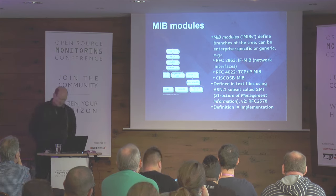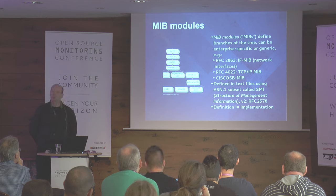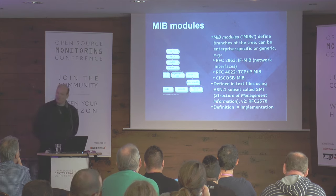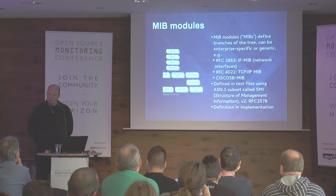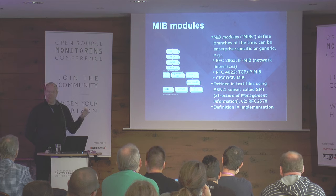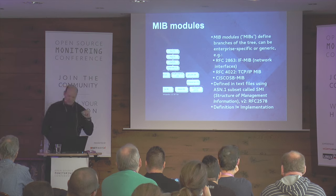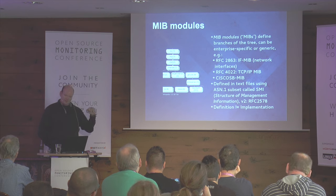MIB modules are defined in text files using an ASN.1 subset called SMI. ASN.1 is Abstract Syntax Notation One — a formal language allowing you to define things by means of productions. Basically, you say A equals B plus C. A subset of this called SMI is what is used to define MIBs.